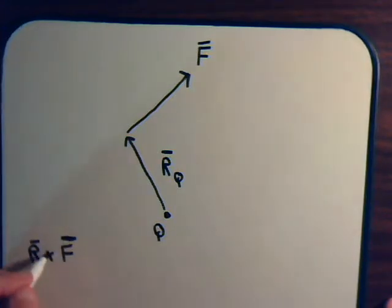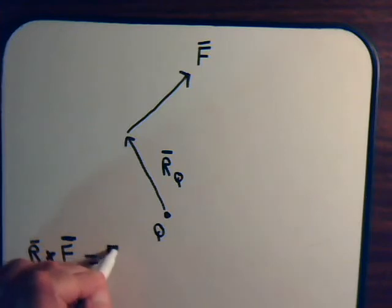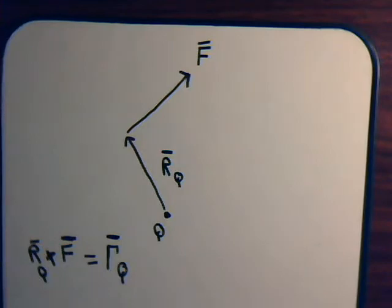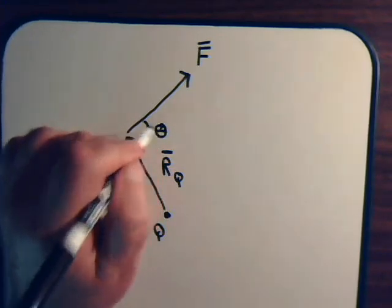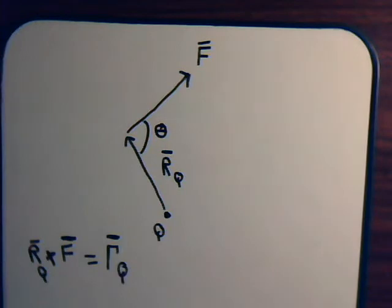But as you saw in video number 15, this really does not have much meaning by itself. We have to know which point are we doing this in reference to. Of course we're doing it with point Q. So that is the torque about point Q. Now as you know, this is the magnitude of R times the magnitude of F times the sine of the angle between them.